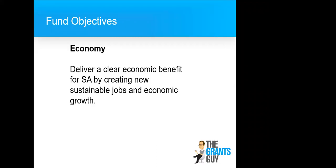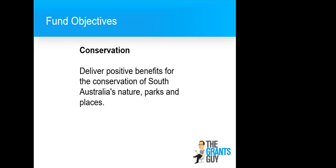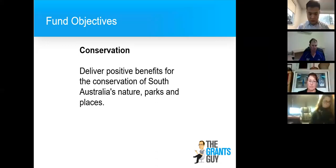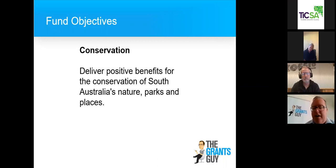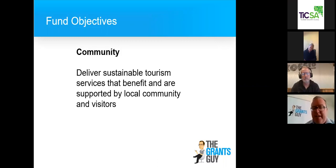The economy objective: deliver a clear economic benefit — how it translates to the local visitor economy, the state-based visitor economy, and potentially wider afield, because we're looking to create new sustainable jobs and economic growth. That's why we're investing into your program. So be mindful of these three objectives — conservation, community, economy — as subheadings when you sit down to draft your grant application, checking how you're ticking the box on each one.